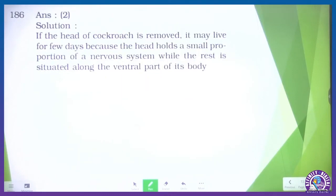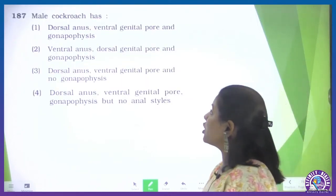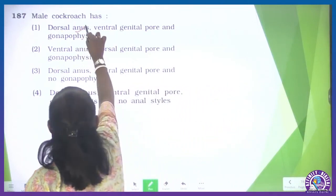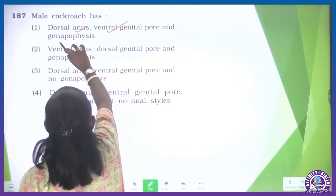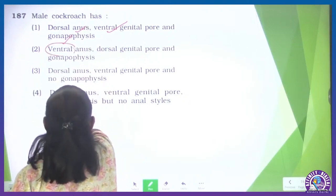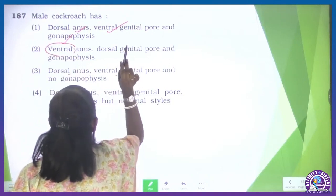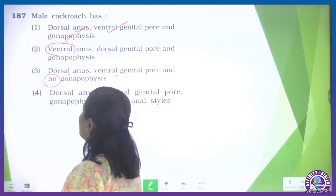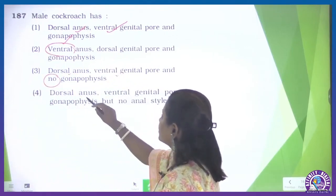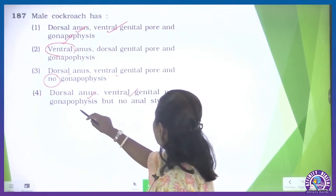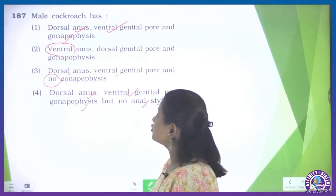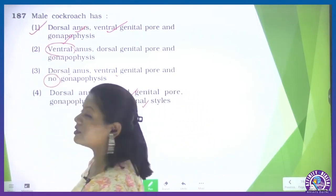Question 187: male cockroach has — it has a dorsal anus, a ventral genital pore, and gonapophysis. Ventral anus is not correct — they have a dorsal anus. Dorsal anus correct, ventral genital pore correct, but 'no gonapophysis' is written in one option — that is not applicable. Dorsal anus correct, ventral genital pore correct, gonapophysis is the external genital. Also, the anus style is a feature of male cockroach. So the correct option is option 1.